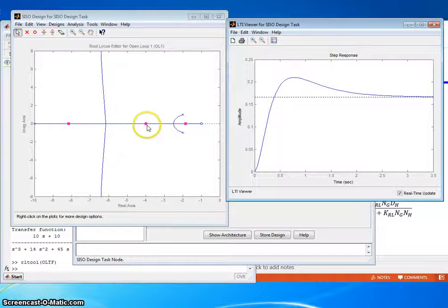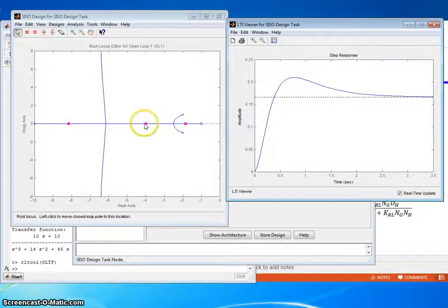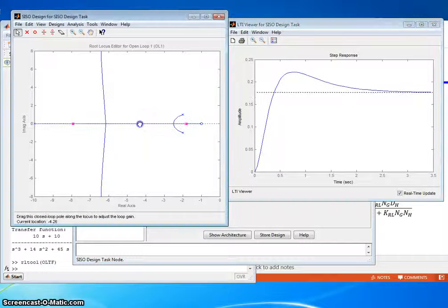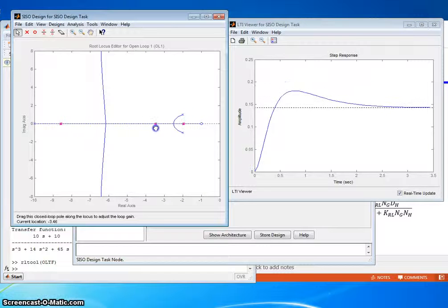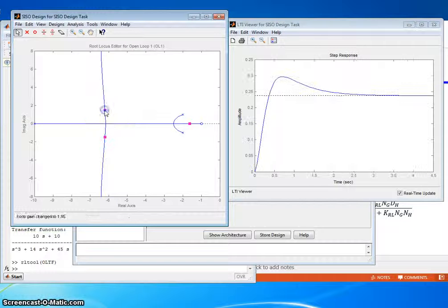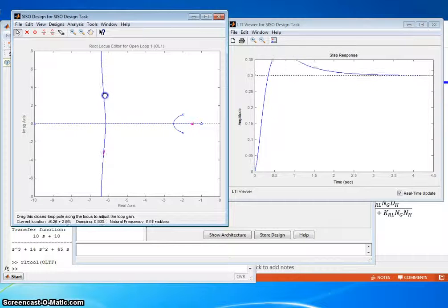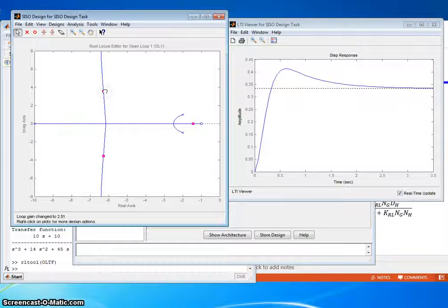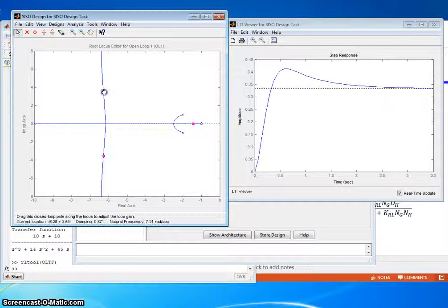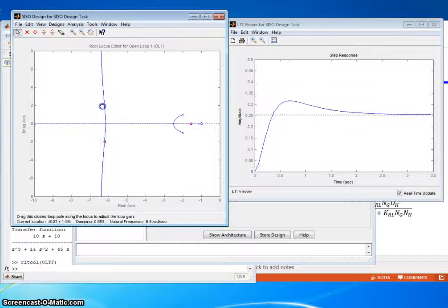So the cool thing about this is I can move KRL and move the location of closed loop poles, and it will automatically update how the step response changes. Let's do that. See that? As I move KRL, it's going to warp the step response so I can see exactly what's happening. I can come up here and do the same thing, move that up and down. If it goes off the scale, just let go. It'll recalibrate the Y scale and you can continue on with your design.